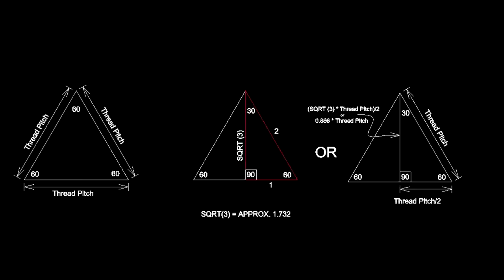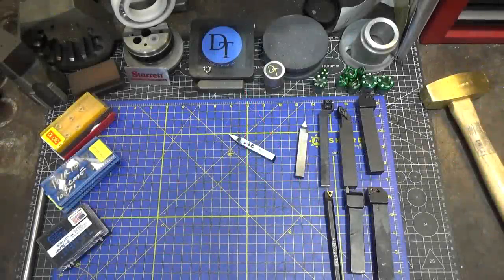Then you file off the top of the threads. Unfortunately the bottom would be sharp — most hobbyists cutting threads without a full-form tool do create sharp-bottom threads, which is not ideal but tends to be plenty functional. You could flatten off the top of your tool for each specific thread pitch, but if you don't, you need to go the full height of this triangle to make a proper thread. Now that we know about thread forms, what tools do we have available to cut threads on a manual lathe?